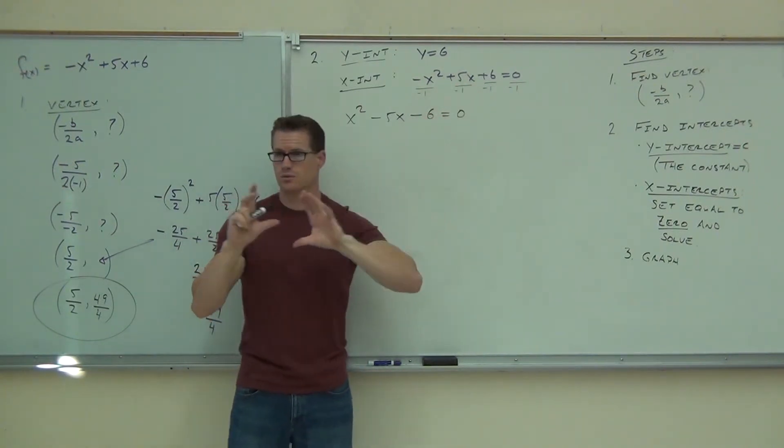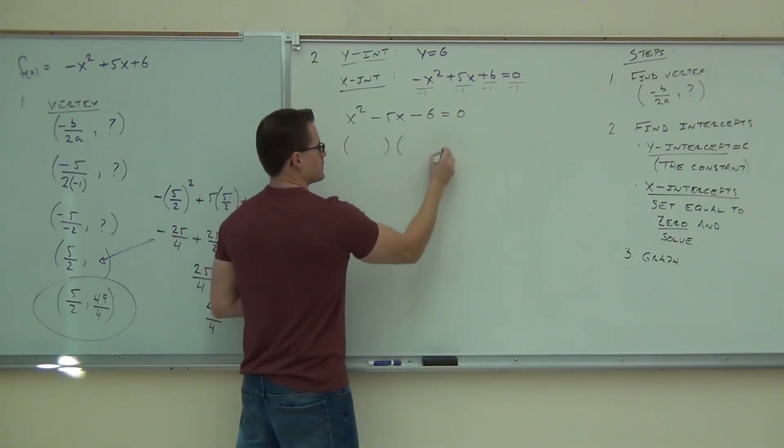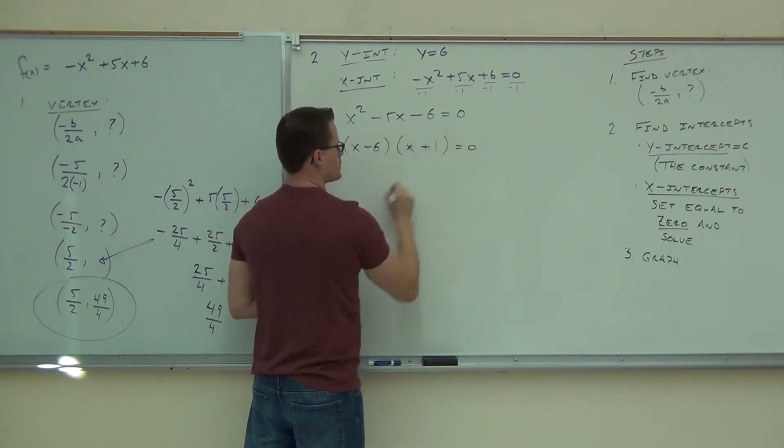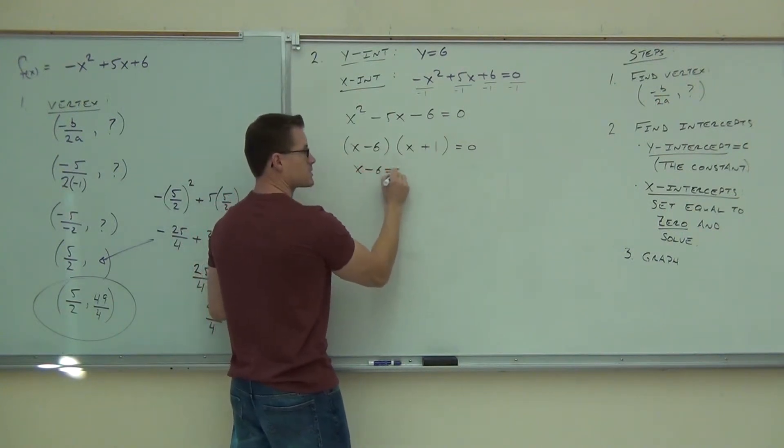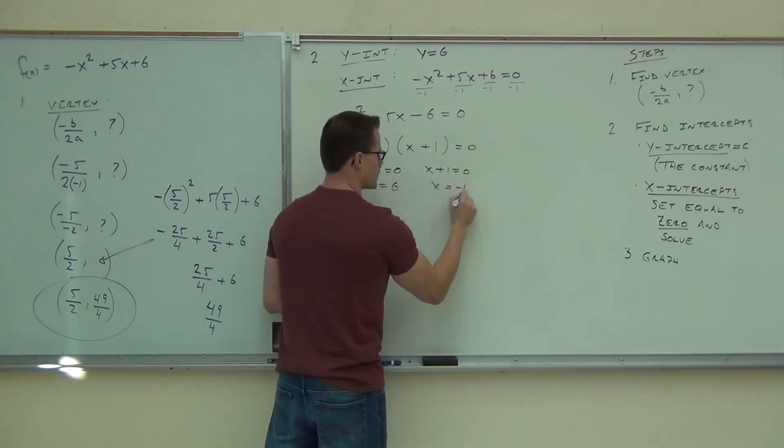Now, this is kind of a nice little principle we can use. Now we can factor it pretty easily. We can do x minus 6, x plus 1. We can do x minus 6 equals 0, x plus 1 equals 0. We can do x equals 6, and x equals negative 1.